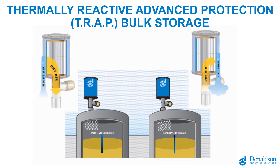Here we'll take a look at a TRAP breather applied to bulk tank filtration — same exact technology, just a larger format. On the left, the bulk tank level is decreasing as you dispense fluids into equipment. As air is drawn into the bulk tank to replace that fluid, it's cleaned by the TRAP breather, stripped of moisture and particulate down to three microns. On the right, the tank level increases as you receive a delivery, shrinking the headspace and pushing air back out through the TRAP breather, regenerating it and pushing moisture and particulate back out of the media.